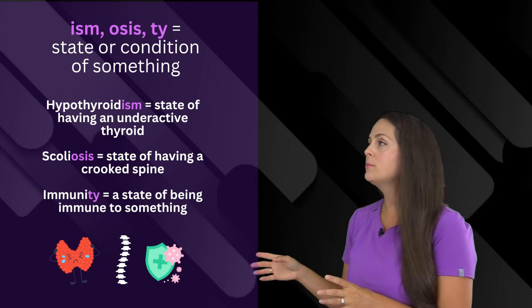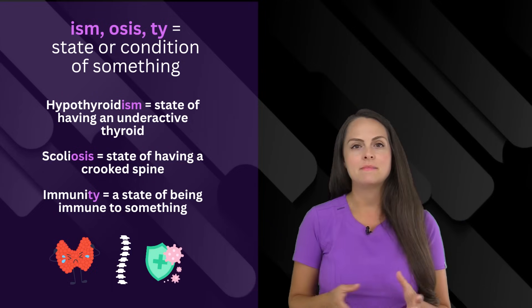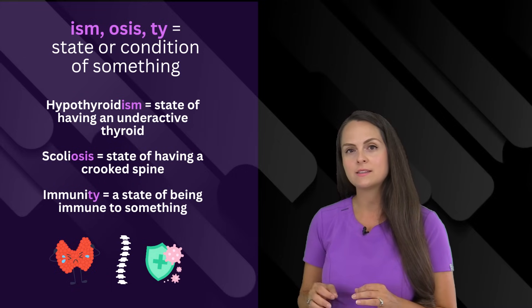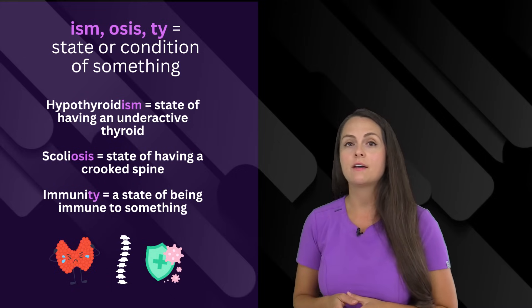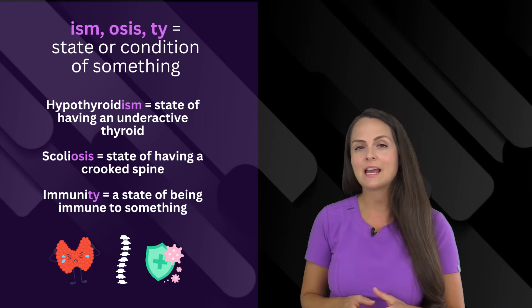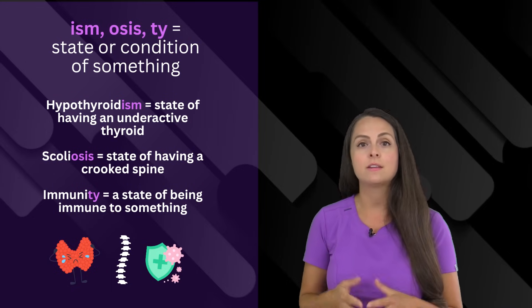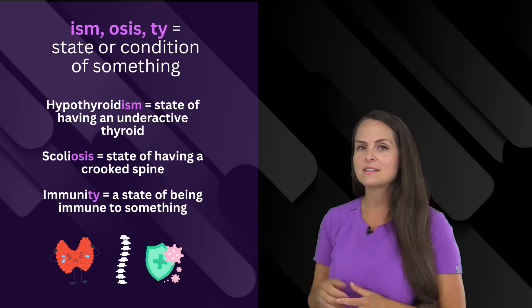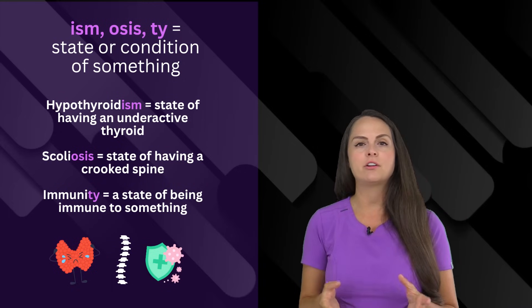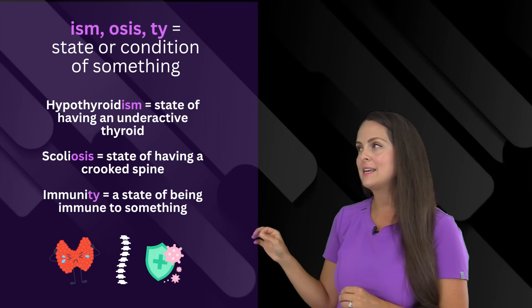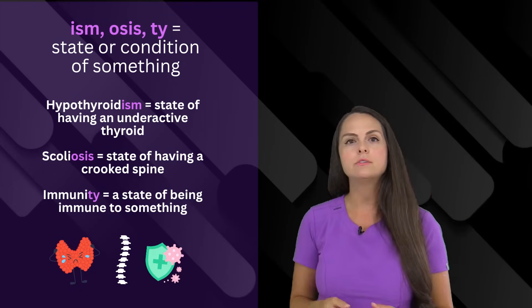Next, we have another group of suffixes that have the same meaning such as ism, osis, or the letters ty, which means the state or condition of something. For example, hypothyroidism is the state or the condition of having an underactive thyroid. Or when we say scoliosis, this is the state or condition of having a crooked spine, or the word immunity with that ty at the end. This is the state of being immune to something.